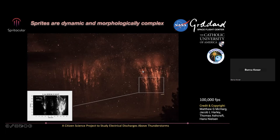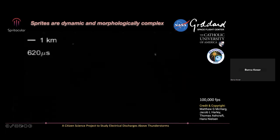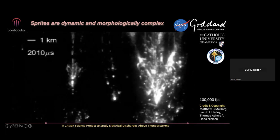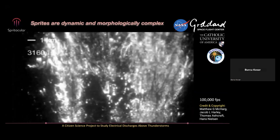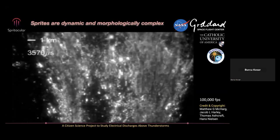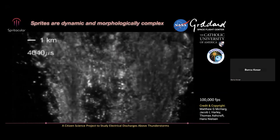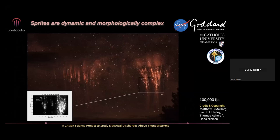Playing it again: sprites start as a ball, propagate downward first, gradually becoming brighter, with negative streamers propagating upward in the opposite direction. We also see what appear to be collisions and merging, though we cannot confirm these are true collisions without recording in 3D from different perspectives with a high-speed camera. In 2D, that's how we see it, but that's not necessarily what's happening.